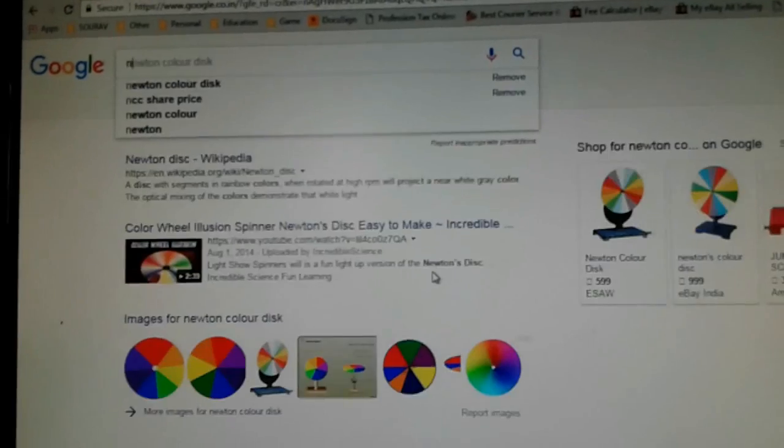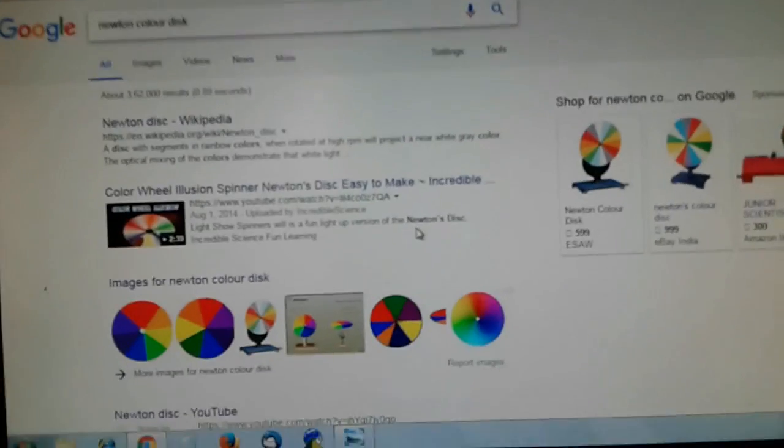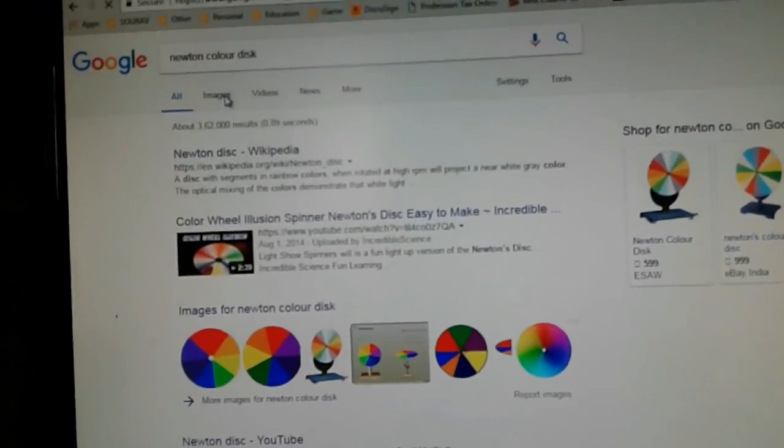So search on Google about Newton color disk. You got the disk with colors. Click on image.